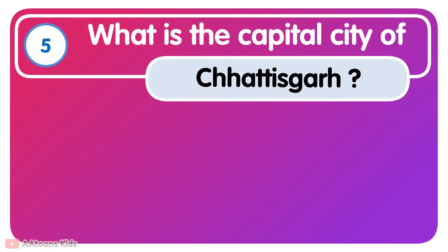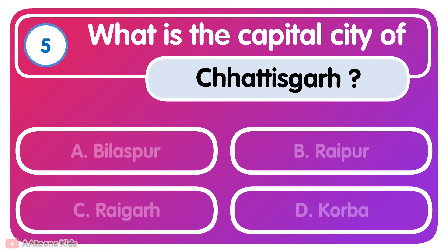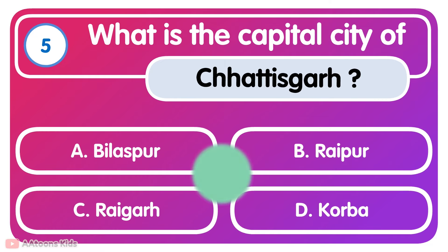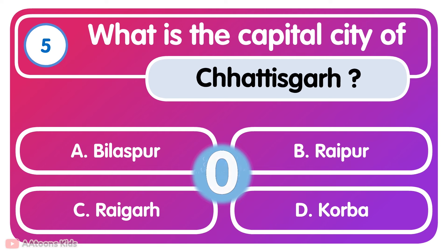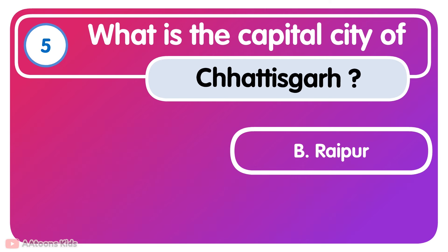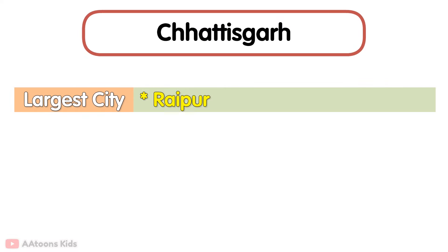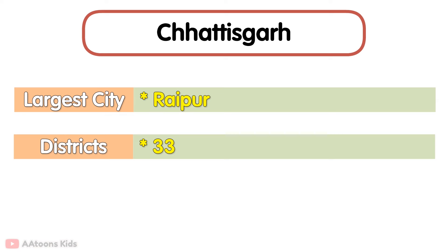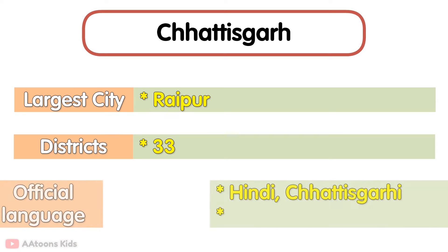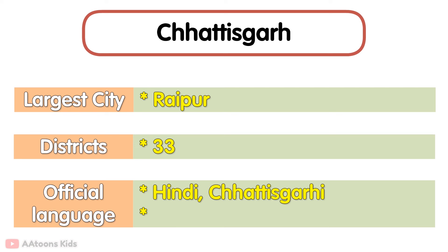What is the capital city of Chhattisgarh? Raipur. The largest city in Chhattisgarh is Raipur. It has a total of 33 districts. Its official languages are Hindi and Chhattisgarhi. Bhilai Steel Plant is one of India's largest steel producers, located in Chhattisgarh.